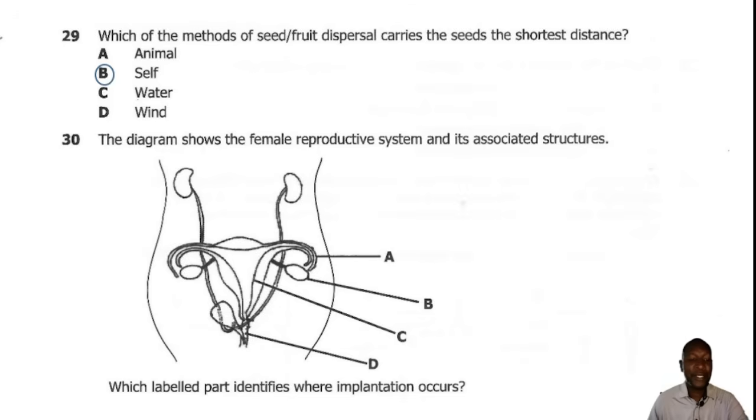Question 30. The diagram shows the female reproductive system and its associated structures. Which labeled part identifies where implantation occurs? Implantation would take place in the uterus, which is labeled C.